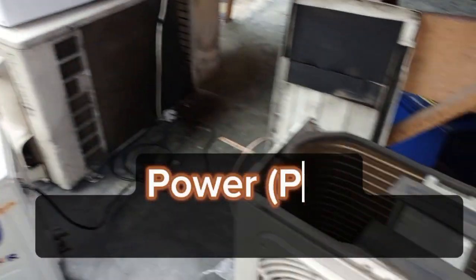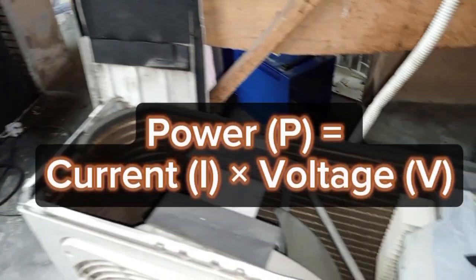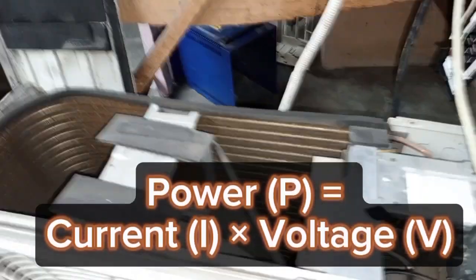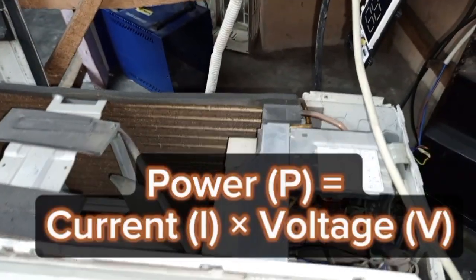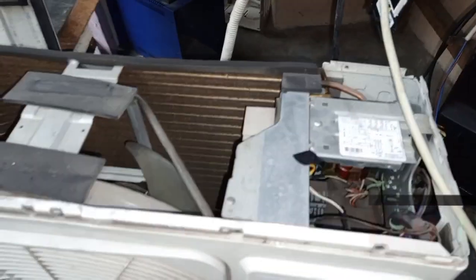Here is a simple mathematical illustration. Power P is equal to current I times voltage V, so P = IV. If you make current the subject of the formula — for those of you who know physics and math — I is equal to P divided by V. So current is directly proportional to power and inversely proportional to voltage.